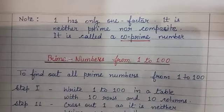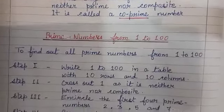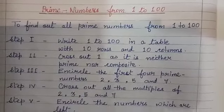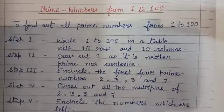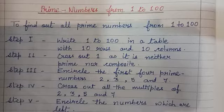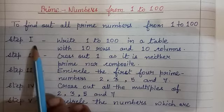The question is how to find out all the prime numbers from 1 to 100. We can find them by a particular method. In this method, first of all you have to write 1 to 100 in 10 columns and 10 rows. This is step number 1.